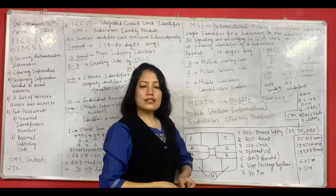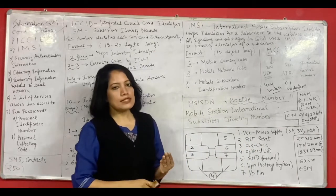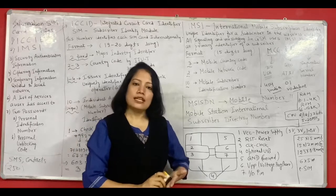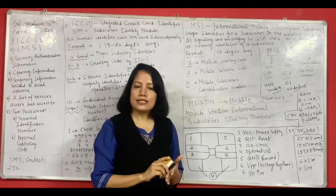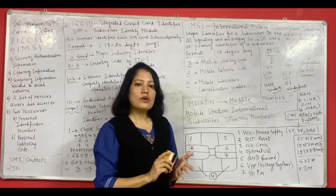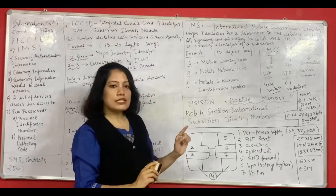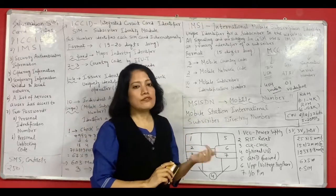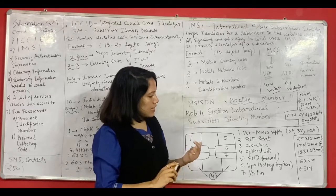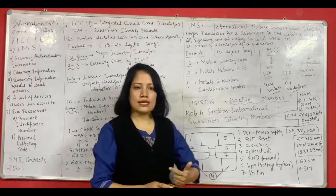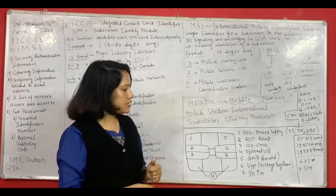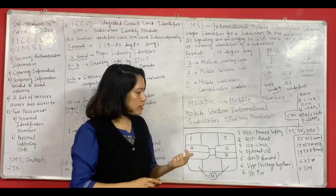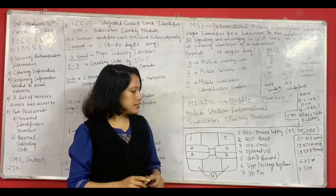So SIM cards now comes in 3 different sizes. And we call them according to their size. We call them as Standard SIM, Micro SIM or Nano SIM. Now Standard SIM is of size 25 x 15 mm. And then a Micro SIM size is 15 x 12 mm. And a Nano SIM size is 12.3 x 8.8 mm.